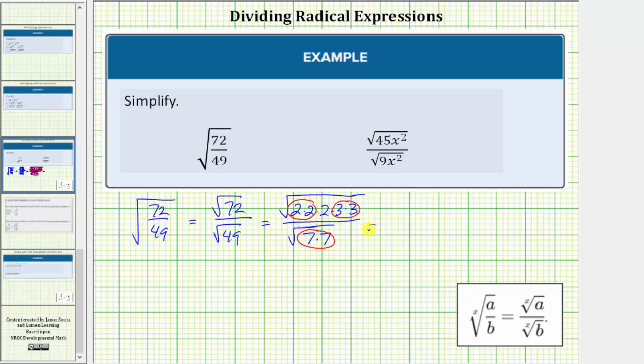Simplifying in the numerator, the square root of two times two simplifies to one factor of two. The square root of three times three simplifies to one factor of three, and we still have square root two. Notice how the denominator simplifies perfectly to one factor of seven.